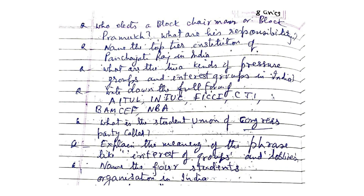Name the top-tier institution of the Panchayati Raj in India. What are the two kinds of pressure groups and interest groups in India? Write down the full forms of AITUC, INTUC, FICCI, CII, BAMCEF, and NBA. What is the student union of the Congress party called? Explain the meaning of the phrase 'like interest groups and lobbies'. Name the four student organizations in India. Explain NAPM.